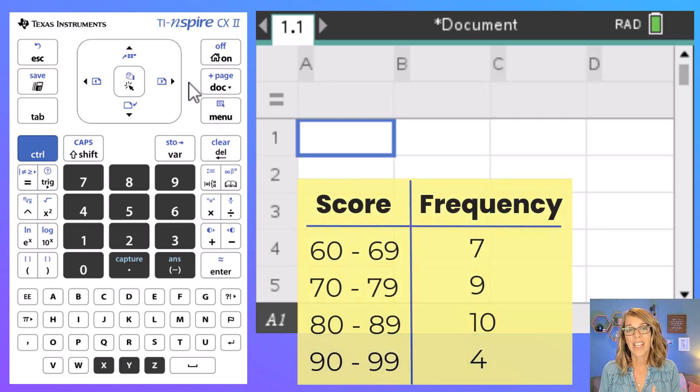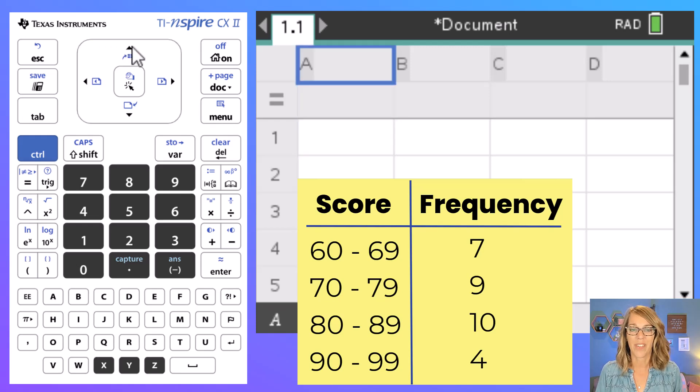Now I want to start by giving my data column a name and my frequency column, which will be the second one, a name as well. I'm going to arrow up so that I am next to the letter A. These are exam scores so I'm going to label this scores and then enter.